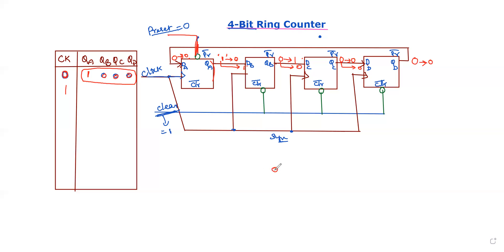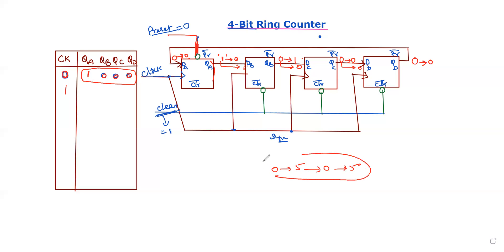The first sequence is 1, 0, 0, 0. This is the count. For a mod 6 count, we count 0 to 5 numbers and the sequence repeats — it never ends, it is rotational.